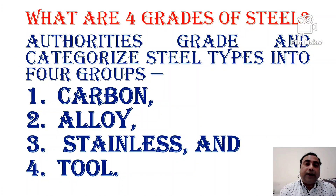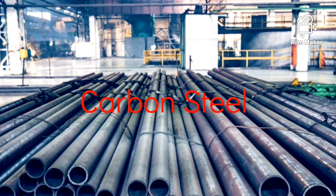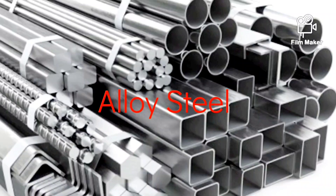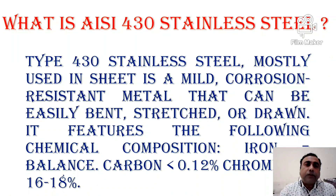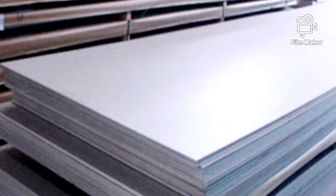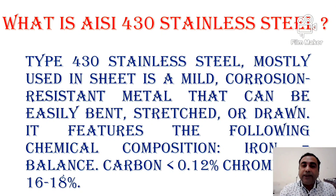There are four grades of steel: carbon steel, alloy steel, stainless steel and tool steel. AISI 430 stainless steel is a mild corrosion resistant metal mostly used in sheet form that can be easily bent, stretched or drawn. Its chemical composition includes iron as the balance, carbon less than 0.12%, and chromium 16 to 18%.